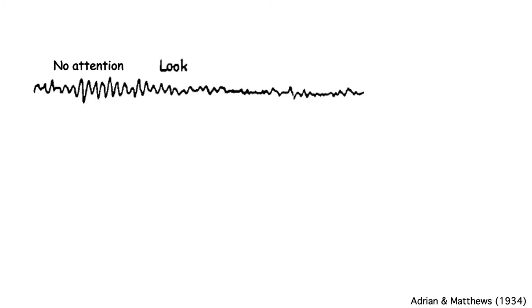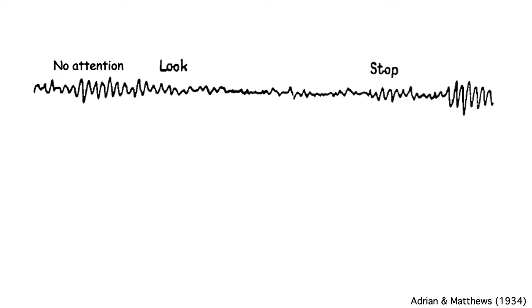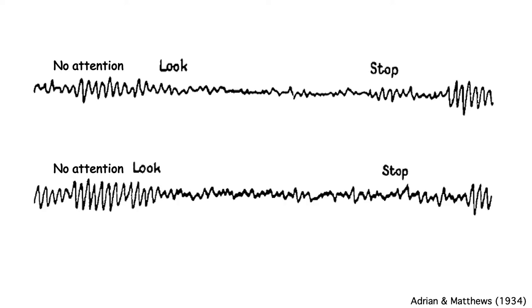"Look," and the subject starts concentrating on the object. This causes the alpha to be suppressed. When the experimenter says, "stop looking," the alpha comes back. And here we see a replication. So you get a suppression of alpha band activity when somebody is paying attention.